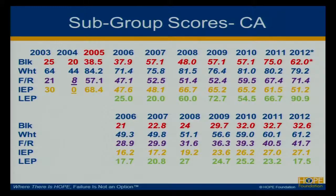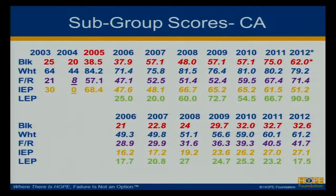Look at our subgroup scores. In 2005 — when we started doing Caring School Community — we had a great coach named Susie Ward, who is here today. She would come to our school and work with us to help improve our achievement. When you look at 2005, our African-American students and some of our other students really went up. Free and reduced lunch: 8% to 57% in one year. Our IEP students went from 0 to 68%.